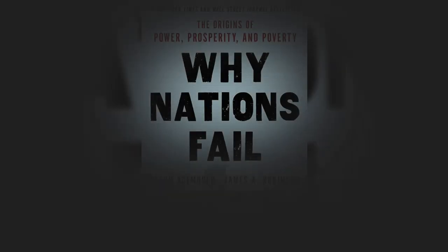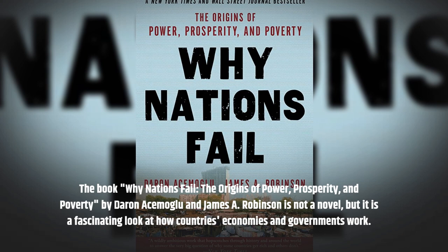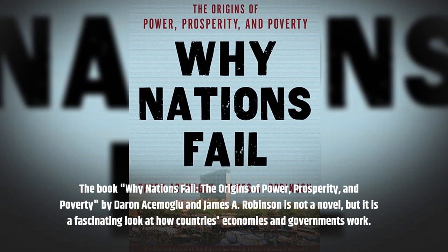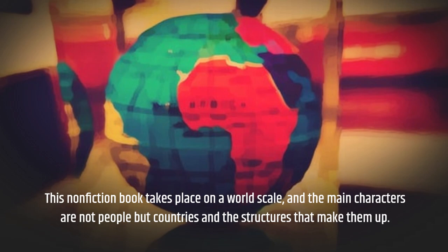The book Why Nations Fail: The Origins of Power, Prosperity, and Poverty by Darren Acemoglu and James A. Robinson is not a novel, but it is a fascinating look at how countries' economies and governments work. This non-fiction book takes place on a world scale, and the main characters are not people but countries and the structures that make them up.